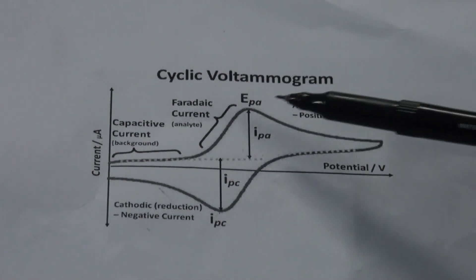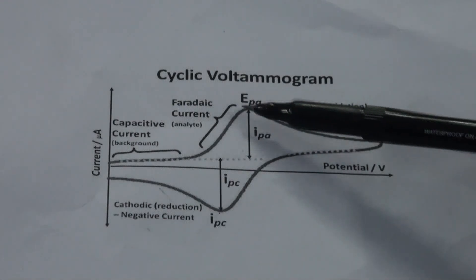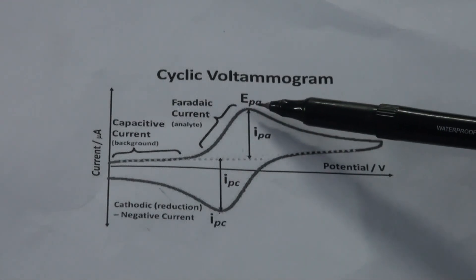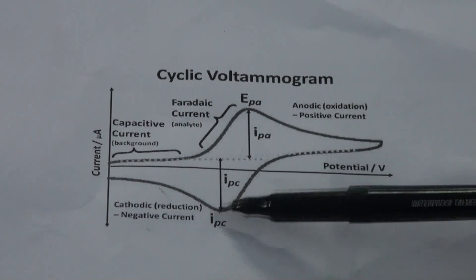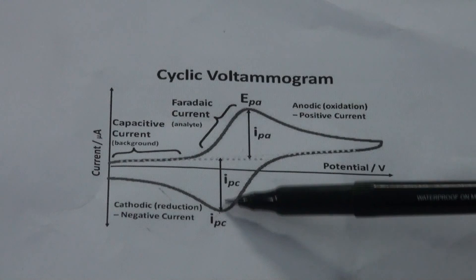We move towards the positive potential and get the anodic peak current value as well as the potential value. Similarly, when the ramp is inverted, we get the cathodic peak potential and the cathodic peak current value.